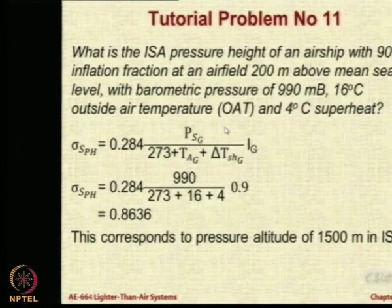Using the relationship P by P0 equals T by T0 to the power 5.453, and T equals T0 minus lapse rate into the altitude. But in this question, the height above mean sea level was given. However, at that place the conditions are not equal to ISA. Therefore, the actual pressure and actual temperature were given.